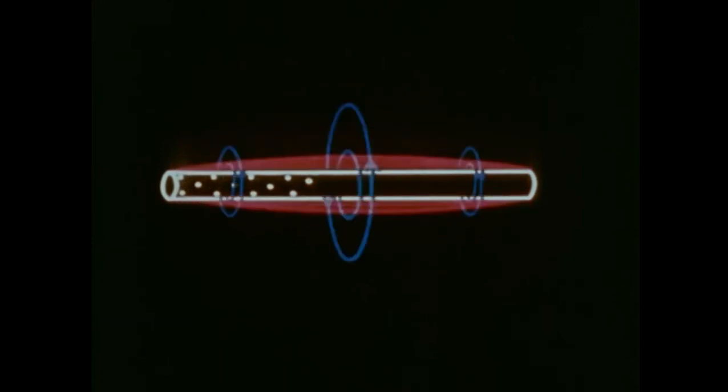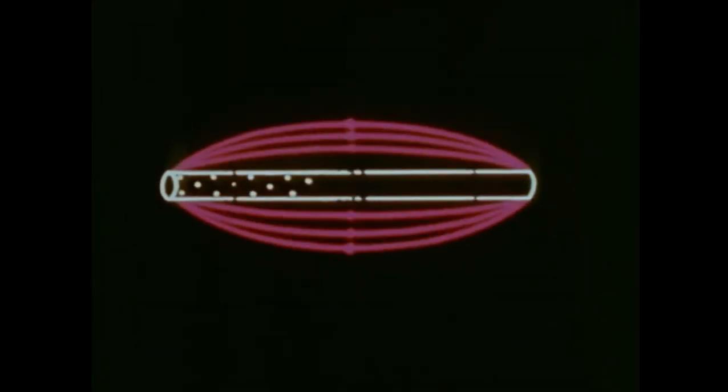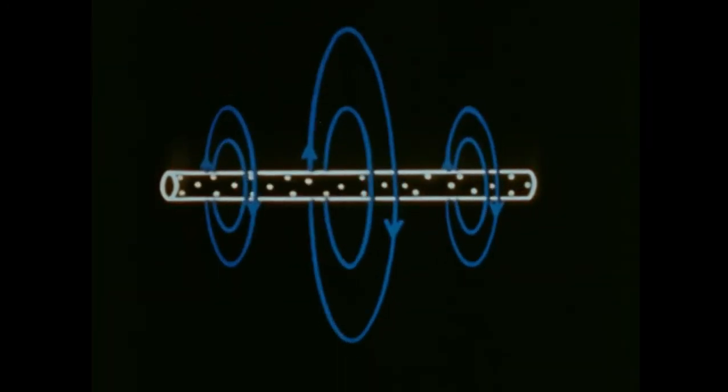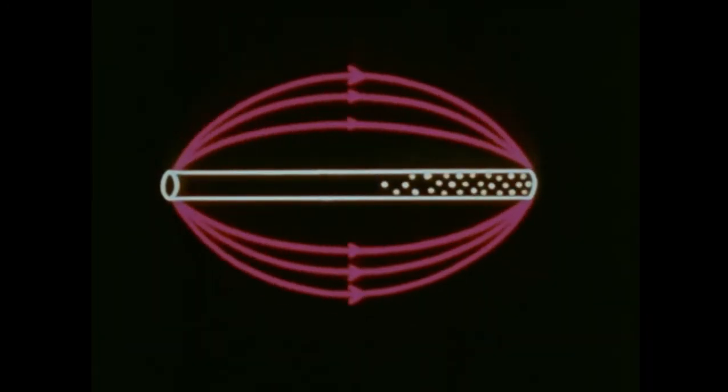These fields, building and collapsing in time and space quadrature, form the antenna's immediate field. This immediate field produces the radiating wave pattern.